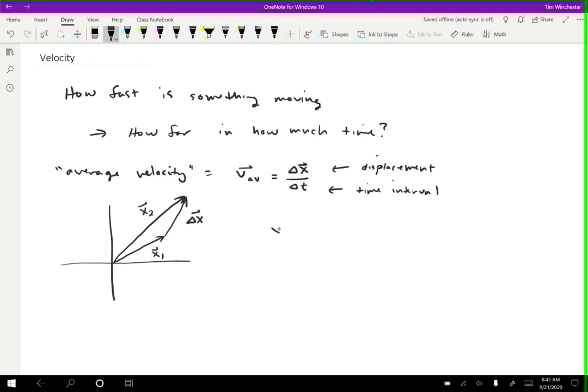So the way I like to think about this is x1 plus the change in position gives me x2. I think that's the easiest, most intuitive way to understand changes in position. But you can also just use the sort of standard change as final minus initial.